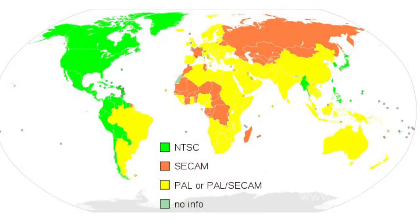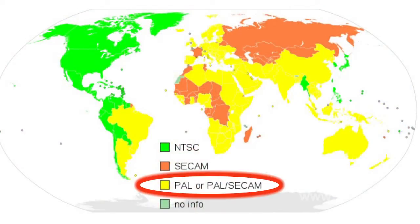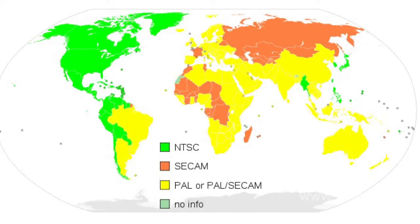The PAL system, or Phase Alternation by Line, is a system of analog color television. It was developed by German engineer Walter Bruch of the Telefunken company and was presented as a color television standard in 1967.